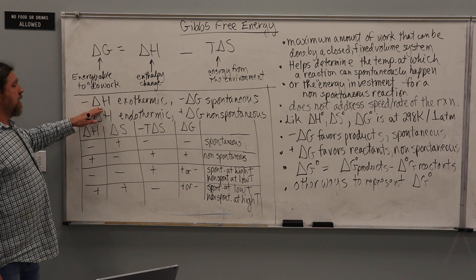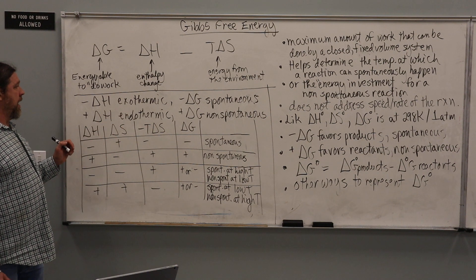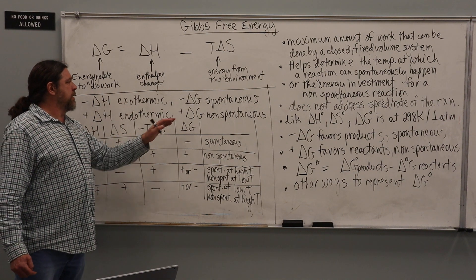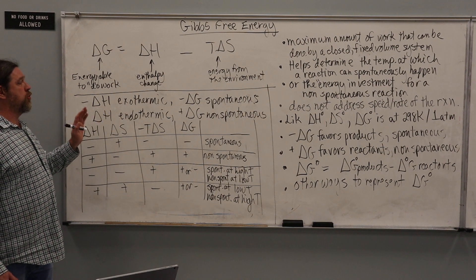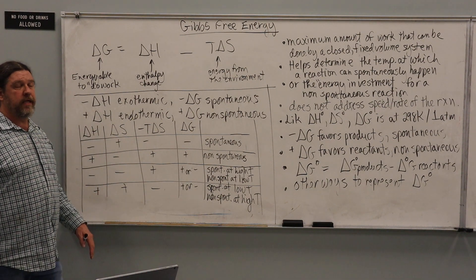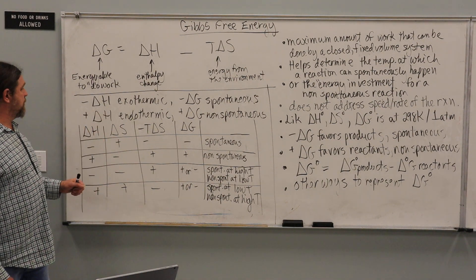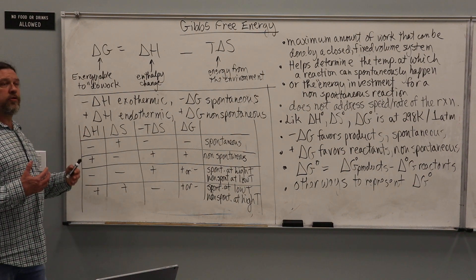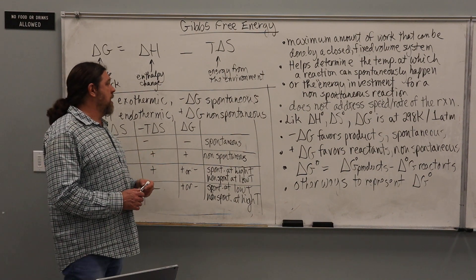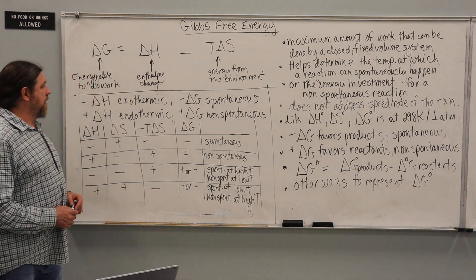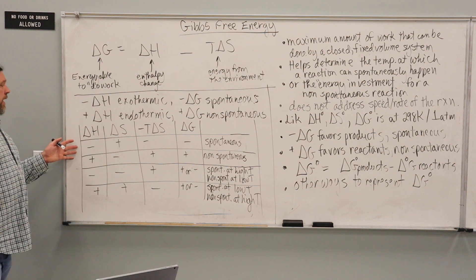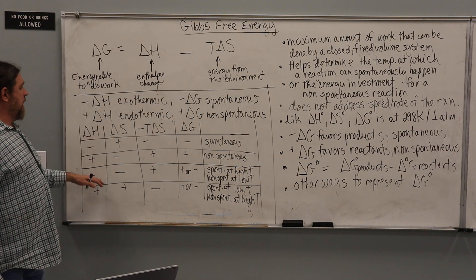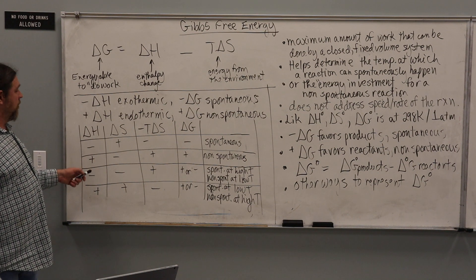If we have a negative enthalpy, we know that is exothermic — go back to the earlier videos if you need a refresher. A negative enthalpy tends to strongly support a negative Gibbs, which is spontaneous. It does not guarantee it, but it does support spontaneity. Conversely, if a change in enthalpy is endothermic, it tends to support the possibility of a non-spontaneous reaction — a positive Gibbs. This has been generalized along with the entropy term (T·ΔS) in a table that appears in every single chemistry textbook.